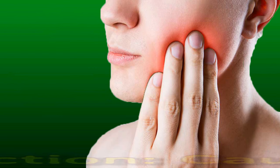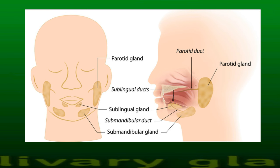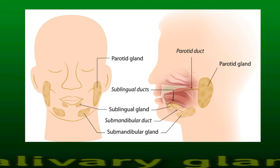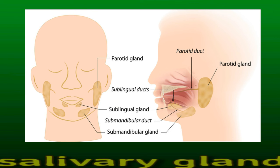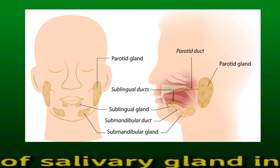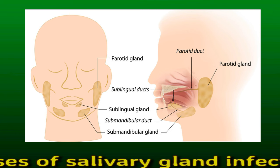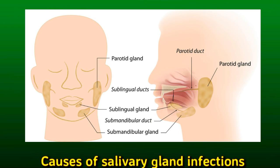Causes of salivary gland infections. The infection may be bacterial or viral. Staphylococcus aureus is the most common bacterial cause. Other bacteria and viruses that can enter the glands and cause an infection include streptococci bacteria, coliform bacteria, the mumps virus, HIV, coxsackievirus, parainfluenza types one and two, and the herpes virus.